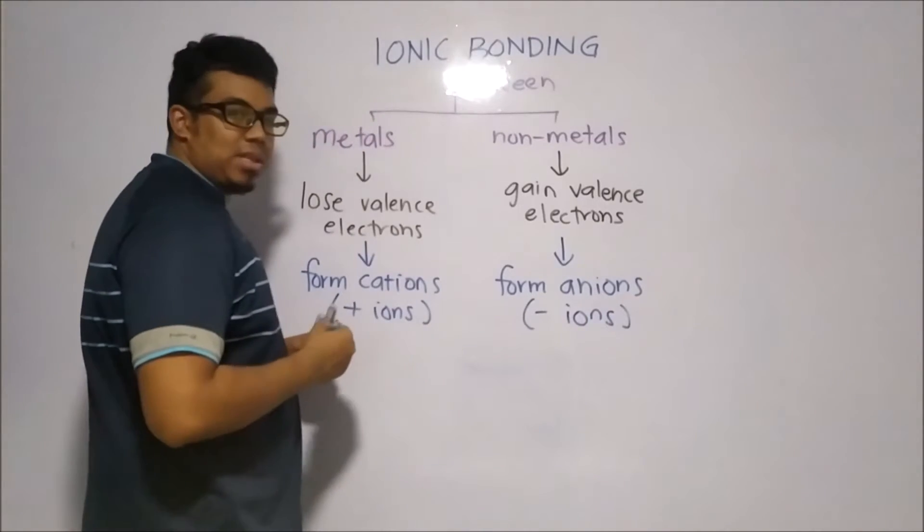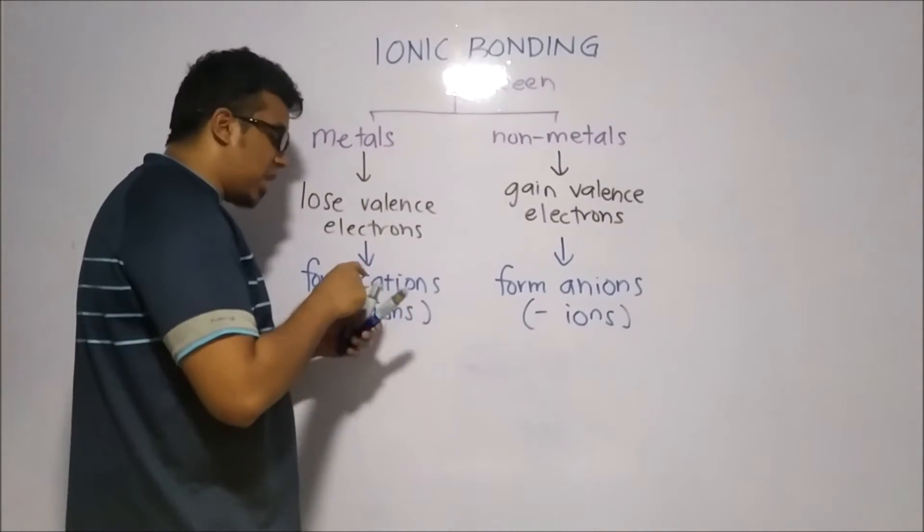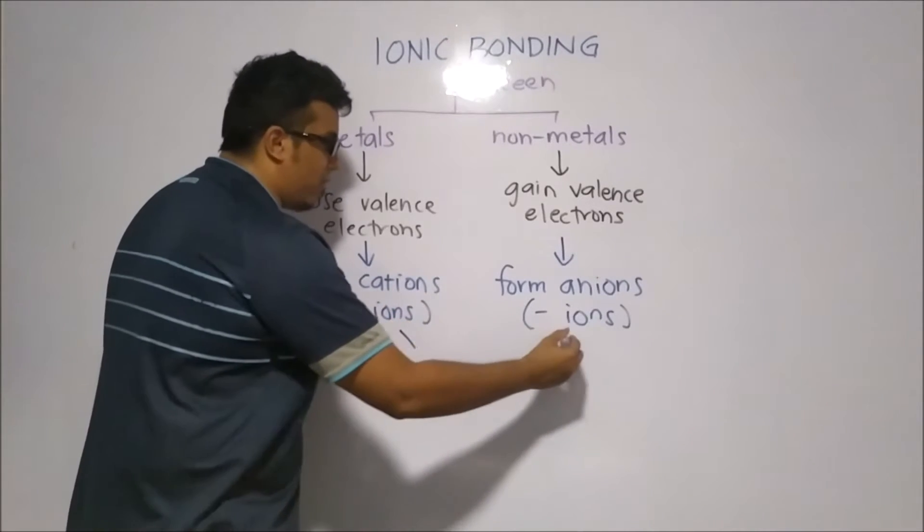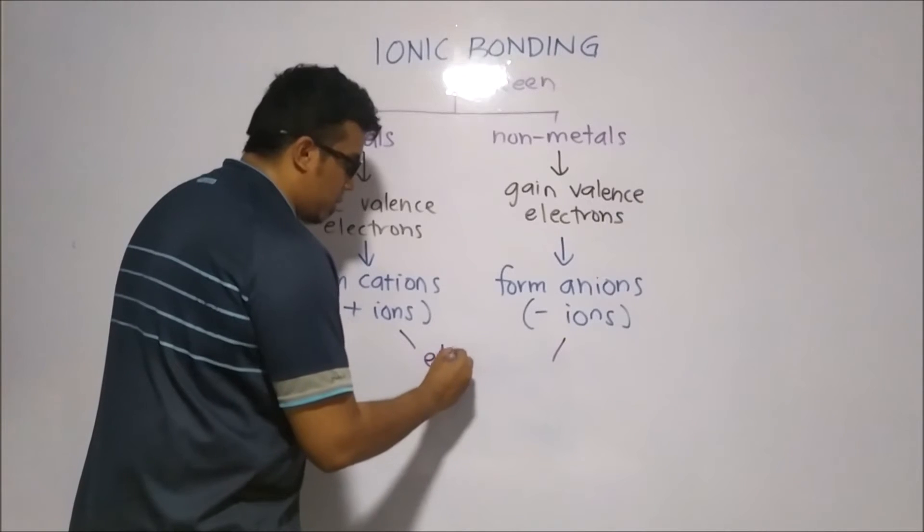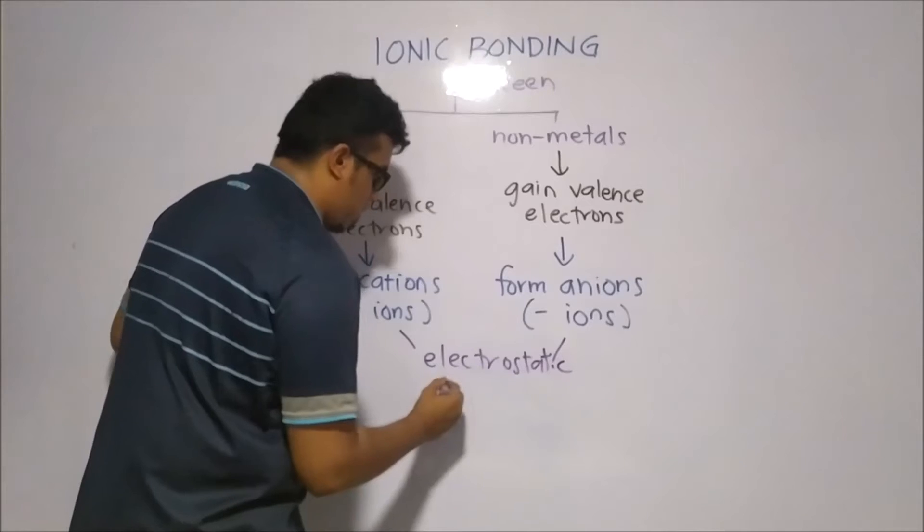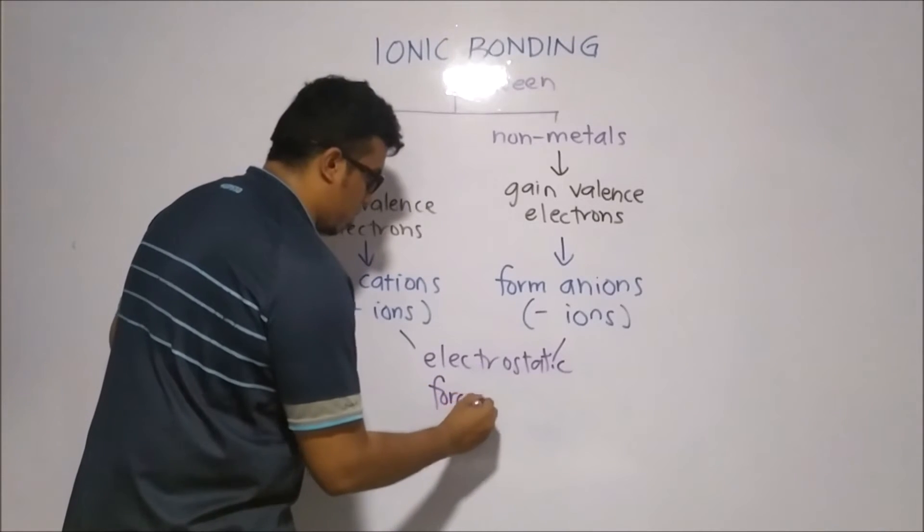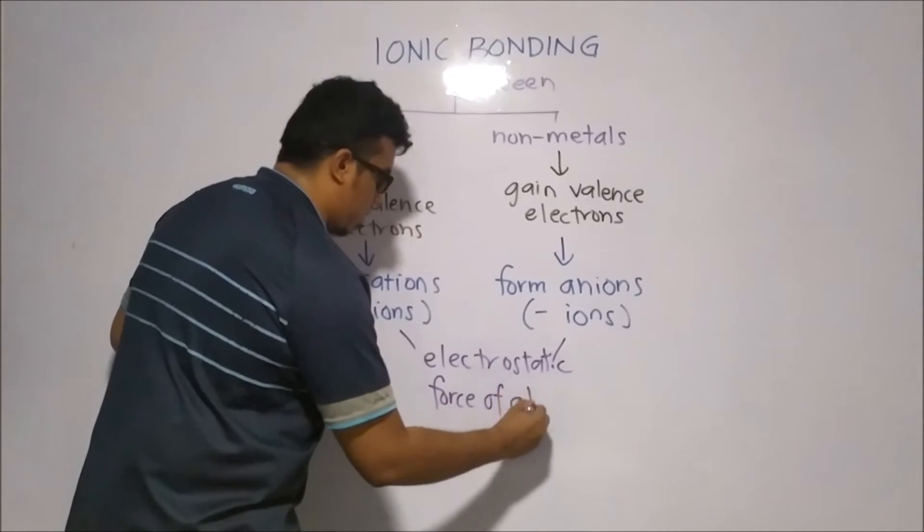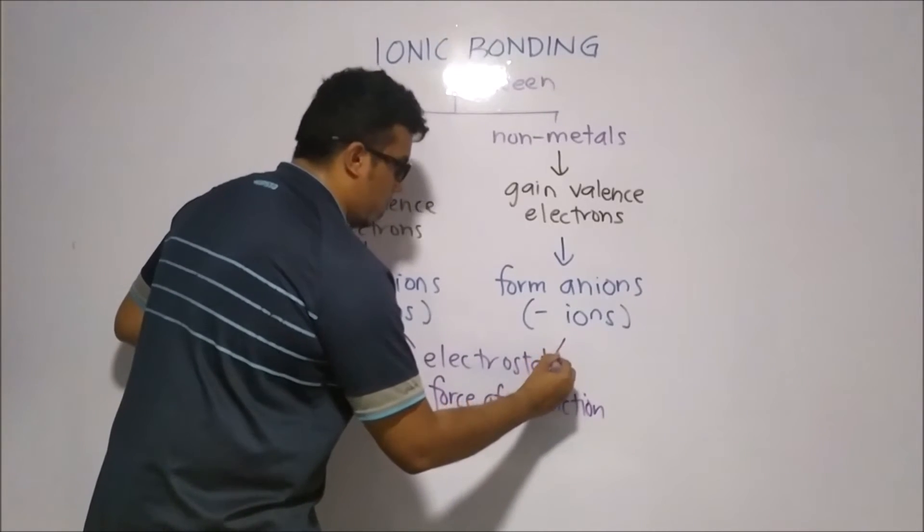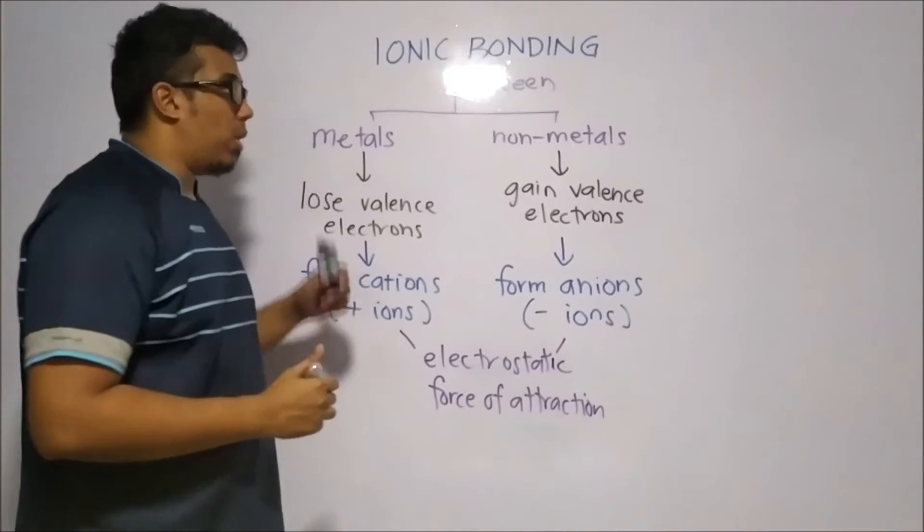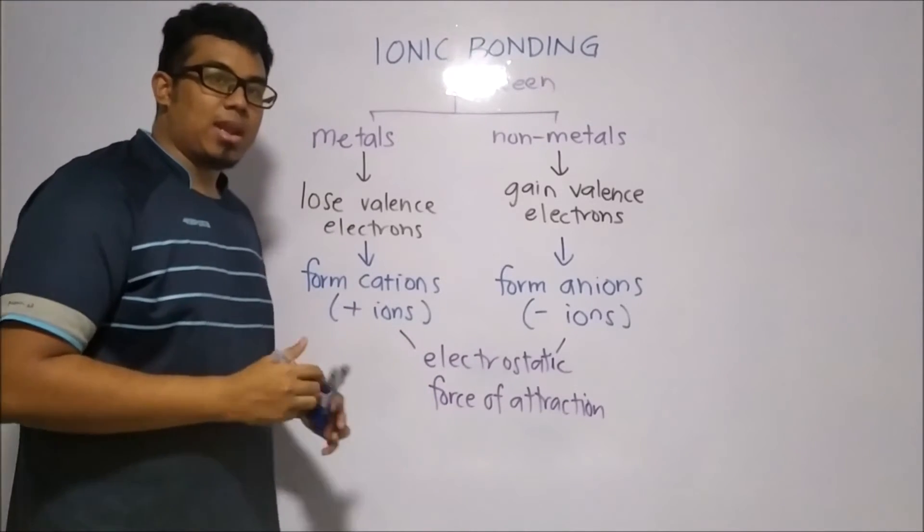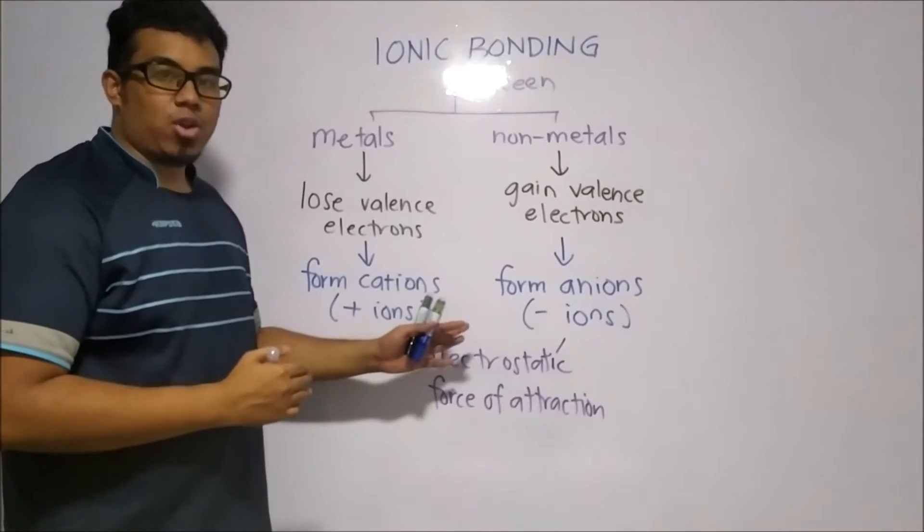So what happens is that when you have two opposite charges, a positive and a negative charge, they will have something between them, which we will call the electrostatic force of attraction. So whenever we talk about an ionic bond, it is actually an electrostatic force of attraction that occurs between a cation and an anion.